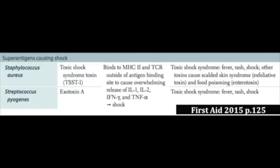Examples of this would be toxic shock syndrome from Staph aureus and the Strep pyogenes toxic shock-like syndrome, which we already mentioned is encoded by a lysogenic phage.